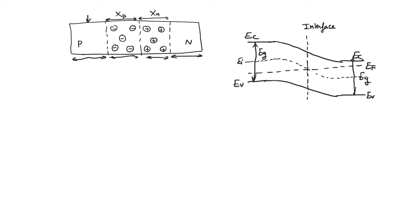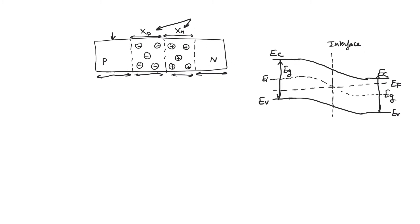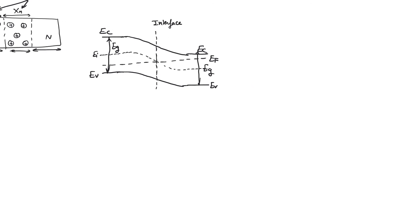We now need to derive quantities that describe the PN junction — for example, the width of the depletion region, which is the sum of Xn and Xp. It is also important to know how the electric field varies with distance. To justify why band bending is quadratic, we use Poisson's equation: dE/dx equals the volumetric charge density rho divided by the permittivity epsilon of the material.